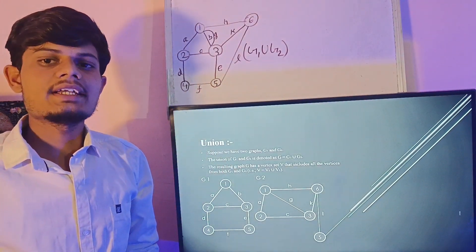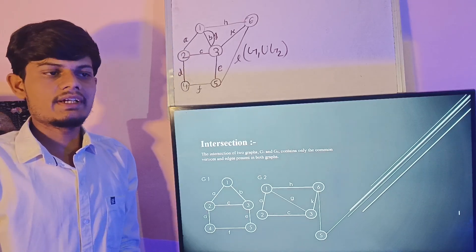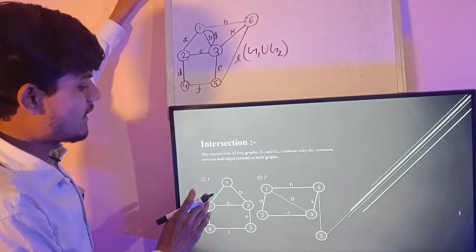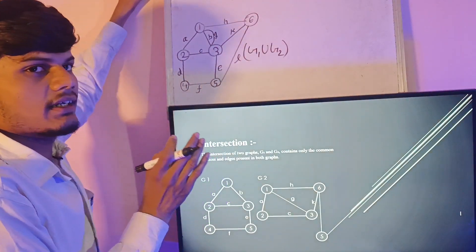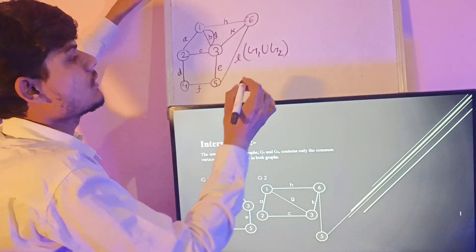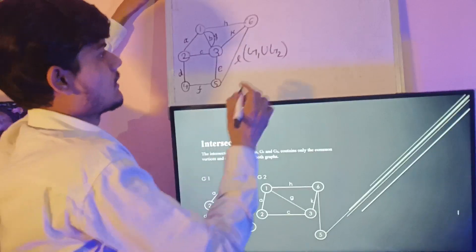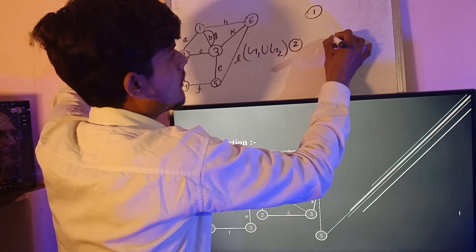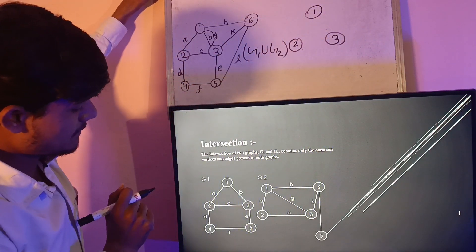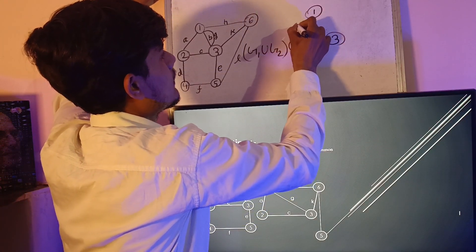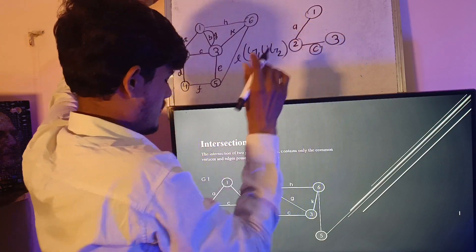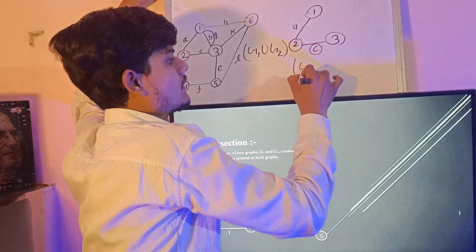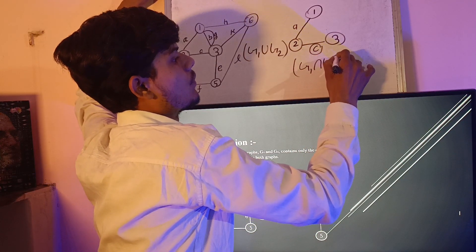Now let us move to our next topic, that is intersection. The intersection of two graphs G1 and G2 contains only the common vertices and edges present in both graphs. The common vertices between G1 and G2 are 1, 2 and 3, and the common edges between them are A and C. This is G1 intersection G2.